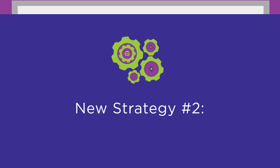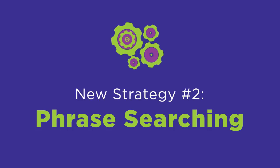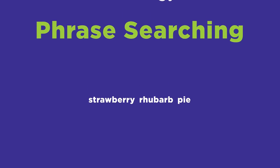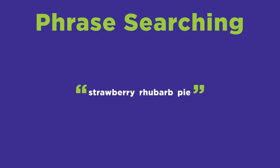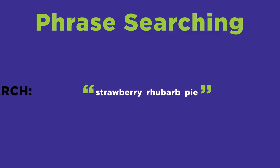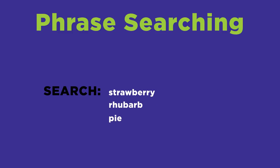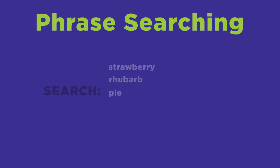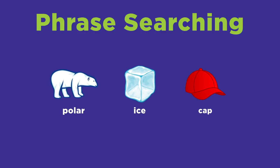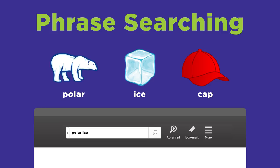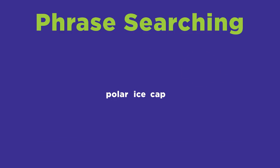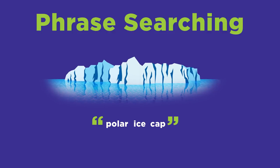Let's move on to the next strategy: phrase searching, which narrows your search. Here's how phrase searching works. Use quotation marks around a phrase when your search terms must be kept together in that exact order. This will force the system to search for your terms as a phrase, not as individual words. For example, let's look at the phrase polar ice cap. Searching as three individual words, many of your results would be irrelevant. Instead, if you put quotation marks around the phrase, like this, you're telling the system to limit results to articles that use these three words in this exact order.